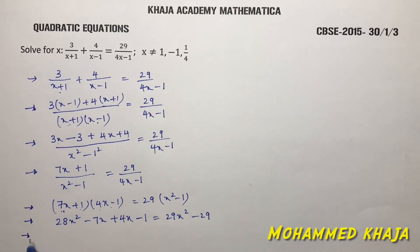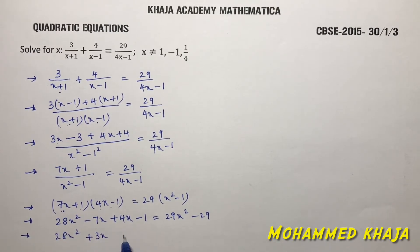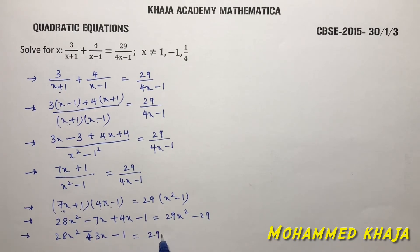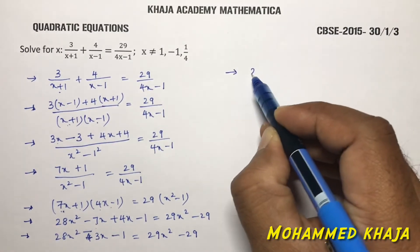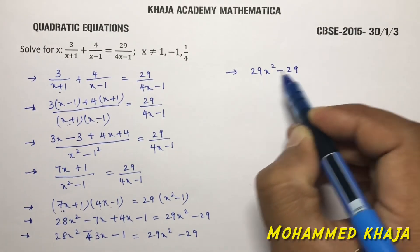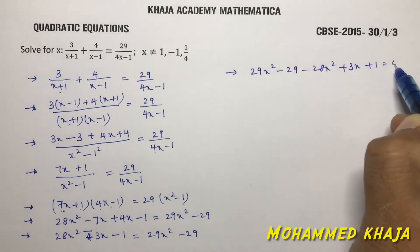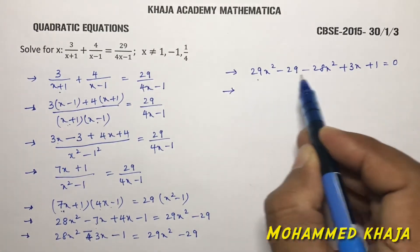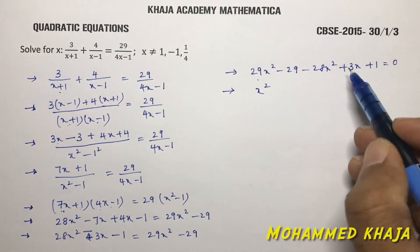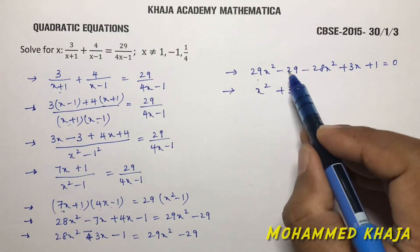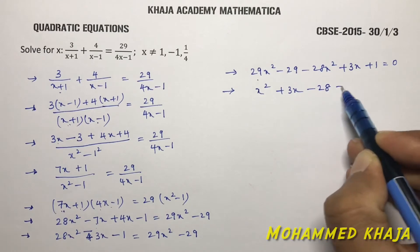Simplifying: 28x² - 7x + 4x - 1 = 29x² - 29, which is 28x² - 3x - 1 = 29x² - 29. Bringing all terms to the RHS: 0 = 29x² - 28x² + 3x - 29 + 1, giving x² + 3x - 28 = 0.